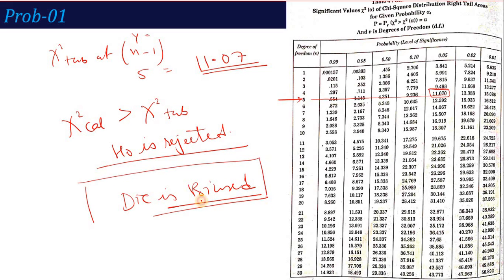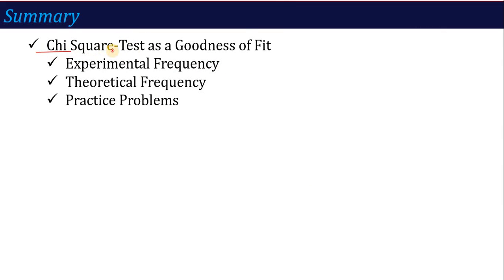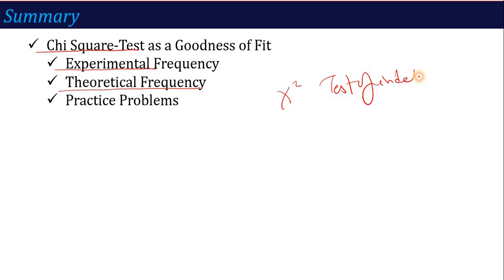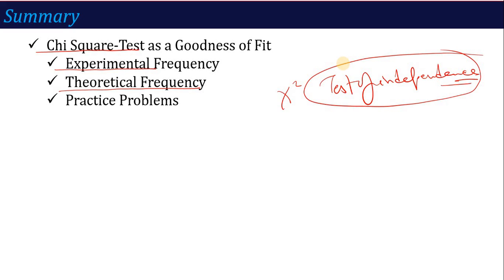This is the Chi-Square test for goodness of fit, where you check how well theory and observation fit together. I hope you now understand Chi-Square test, observed frequency, and theoretical frequency. The second application of Chi-Square test — chi-square as a test of independence, checking the dependency between two attributes — will be covered in the next lecture. Keep practicing. Thank you.